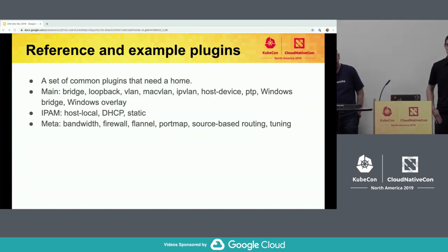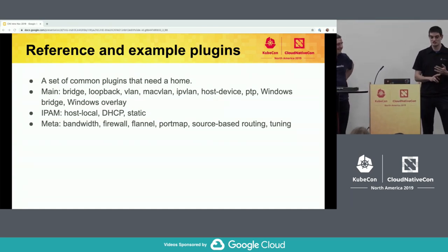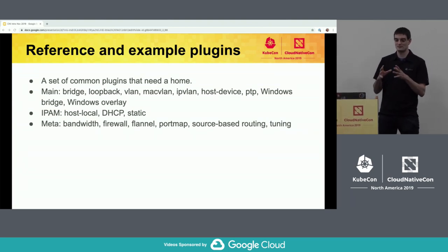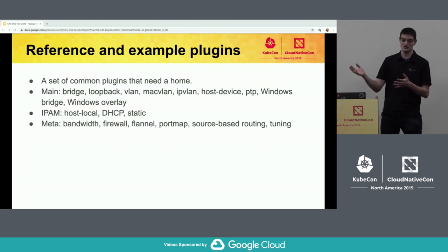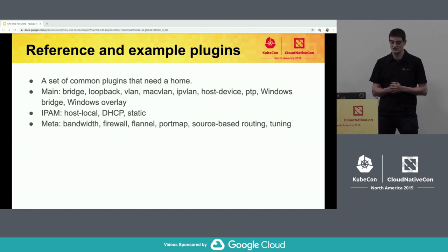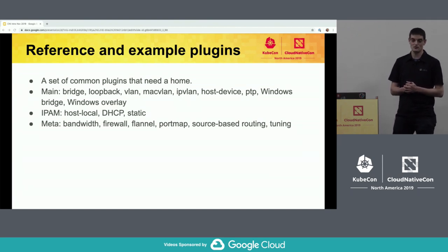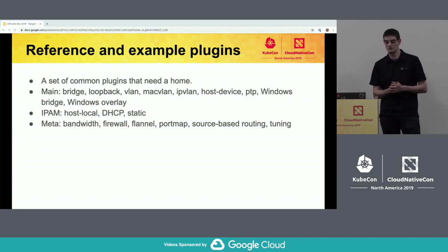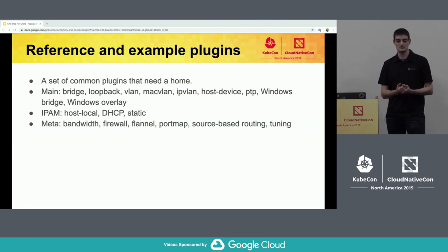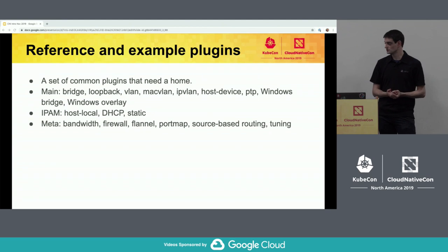So the reference plugins we have — there's Bridge, which a lot of you may be familiar with because that's usually the default one you see in examples on the internet. It's just a local bridge on that particular host or node, and then all the containers are connected to it with VEth interfaces. There's also VLAN, MacVLAN, IPVLAN, host device, and point-to-point. Over the last year and a half or two years, we've gotten a couple of Windows-related plugins. The Windows Bridge one essentially duplicates the functionality of the Linux Bridge plugin — basically the same constructs but on the Windows side — and then there's a Windows Overlay plugin that uses VXLAN between two different Windows nodes to provide communication.